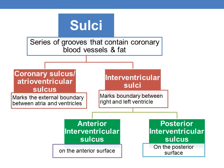Now coming to the classification or types. Sulci is nothing but a series of grooves that contain coronary blood vessels and fat. And mainly there are two sulci: the first one is coronary sulcus or atrioventricular sulcus, and the second is interventricular sulci.